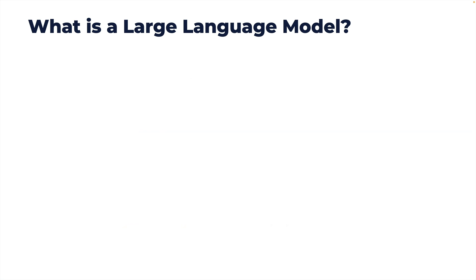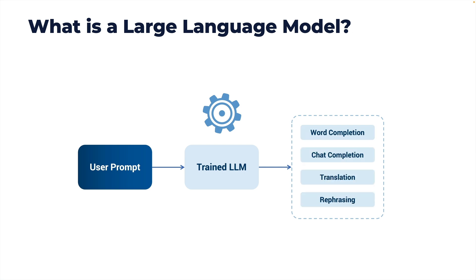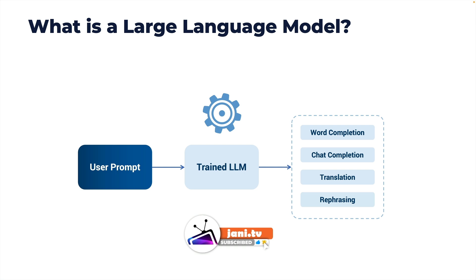Once an LLM is trained, it accepts a prompt as input and responds with a task. This task could be word completion — you send a sentence with a blank and it comes back with the complete phrase or sentence. Similarly, you can have some context and have the LLM behave like a chatbot; the task there is chat completion. LLMs can also translate depending on how many languages they are trained on — for example, translating English to French or French to German.